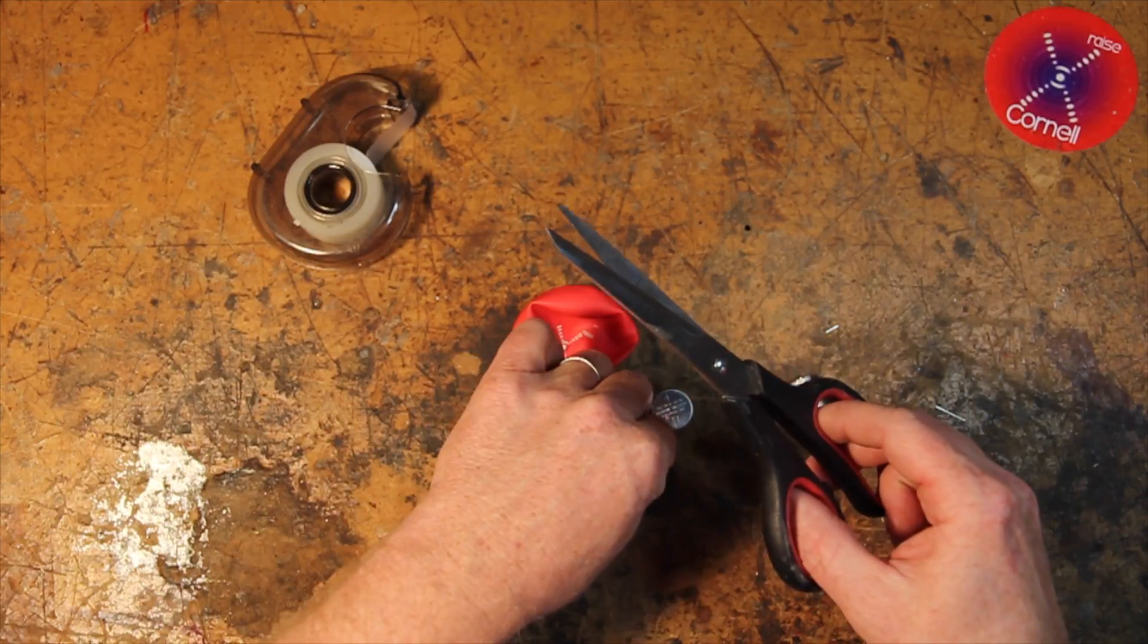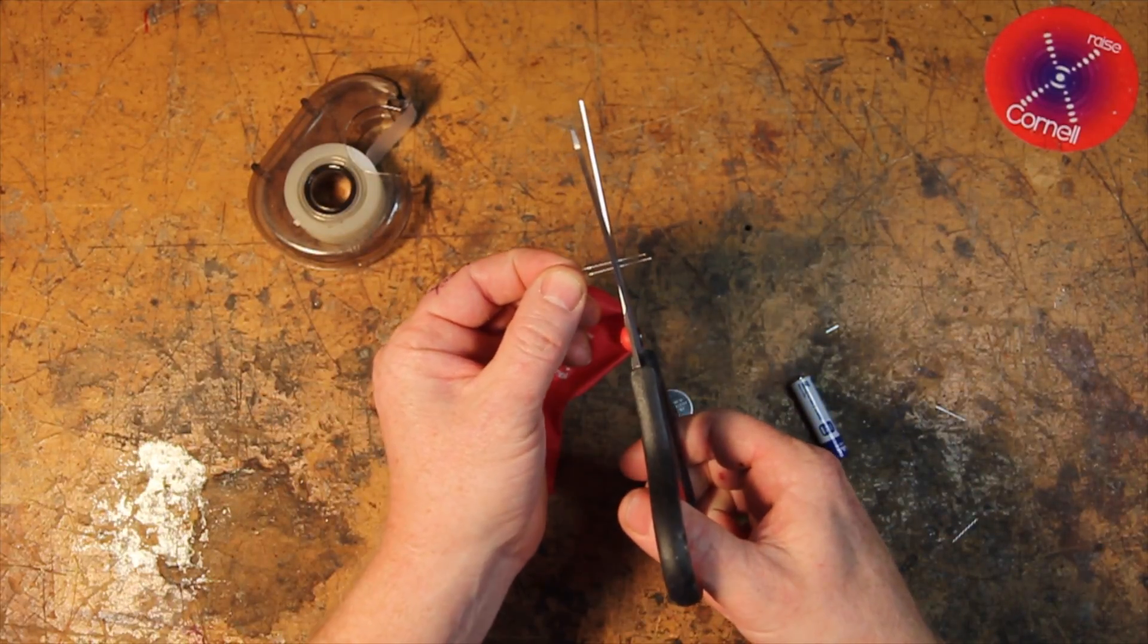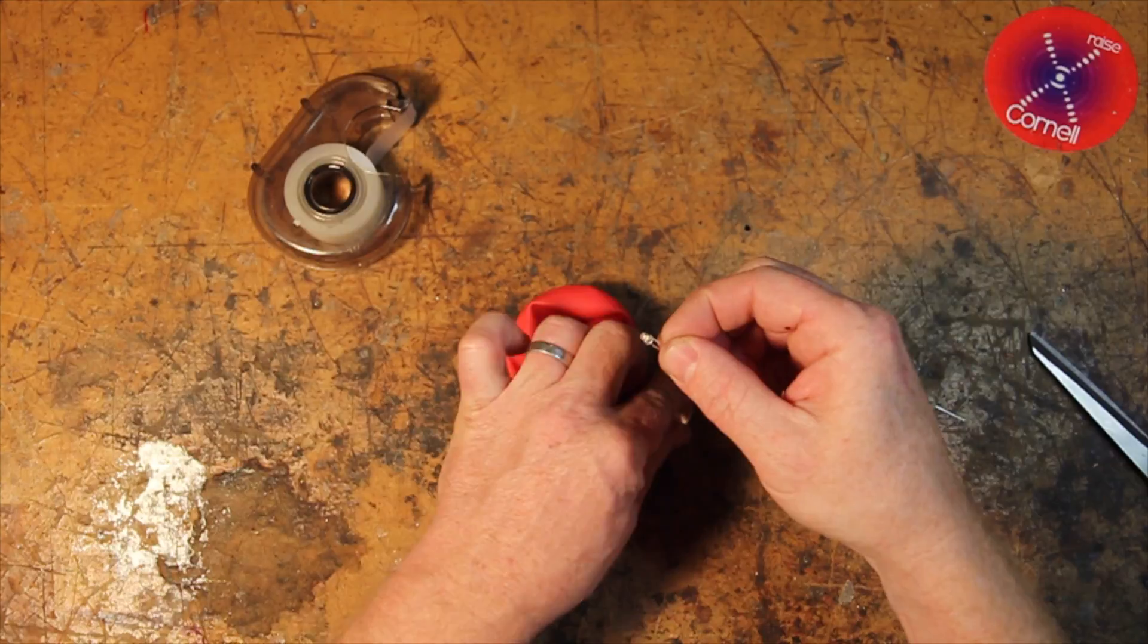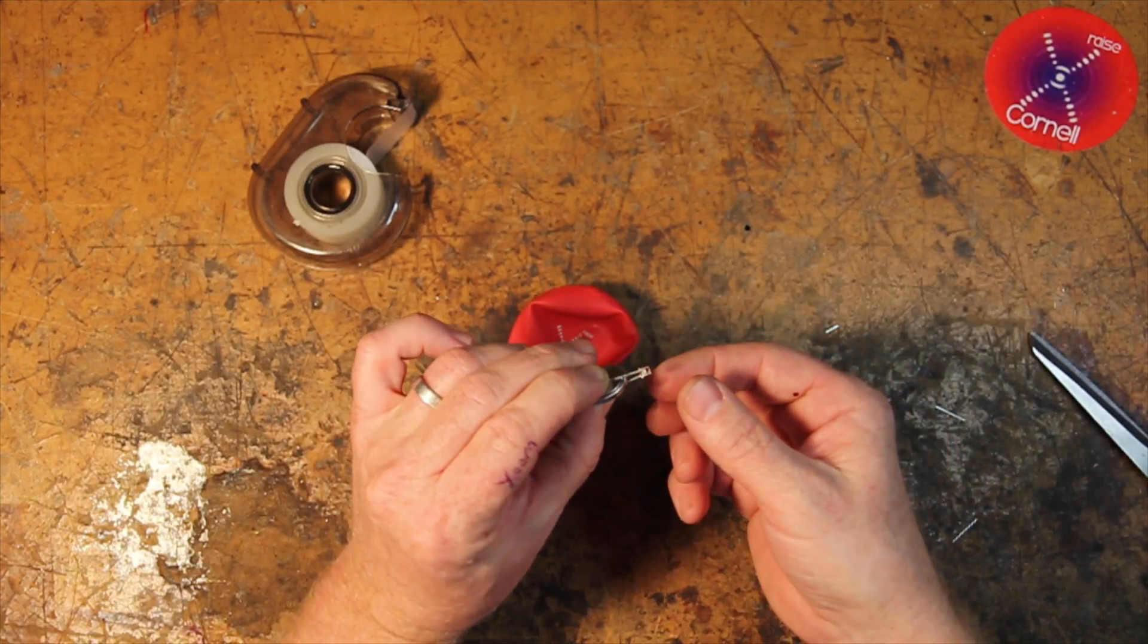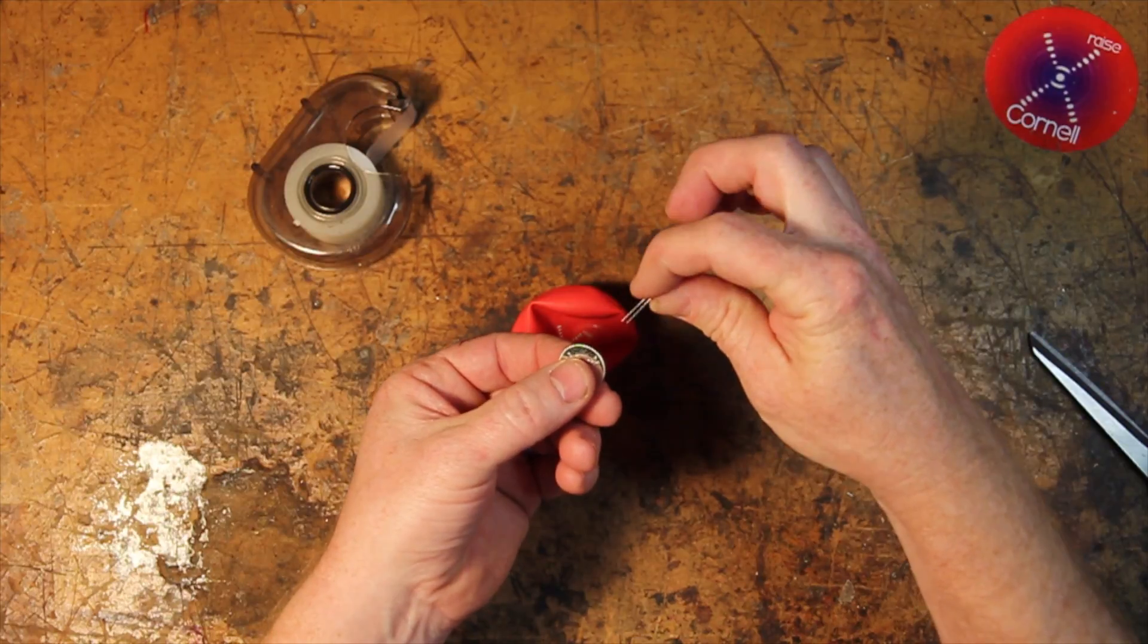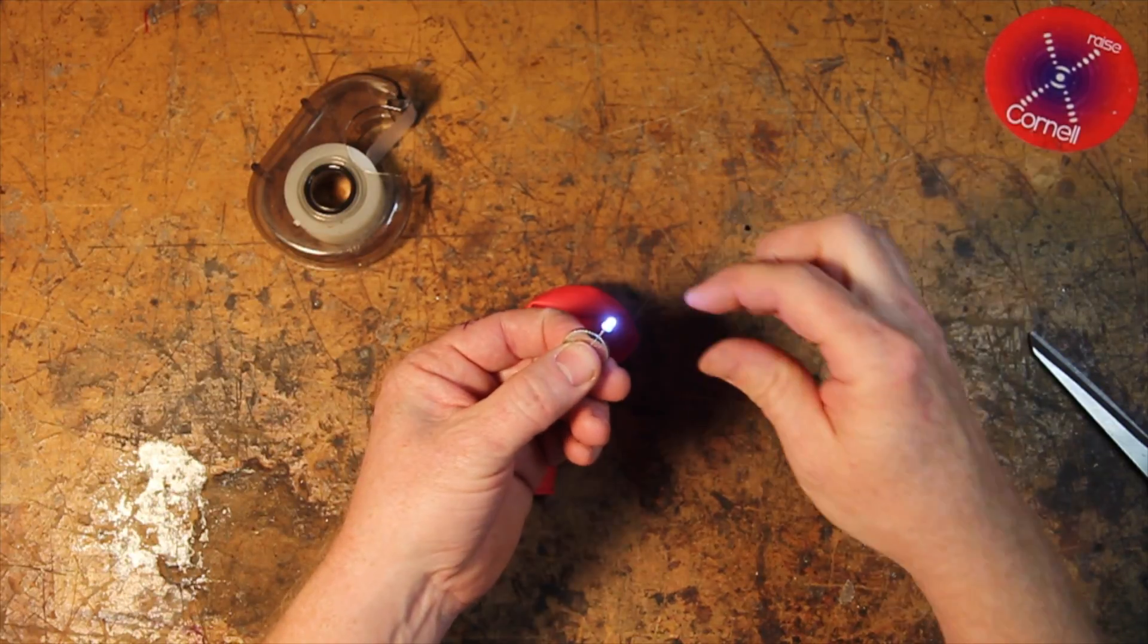First cut about half the length of the legs of the LED light. Then put one leg on each side of the battery. If it doesn't work, then you have to switch the legs around until it lights.